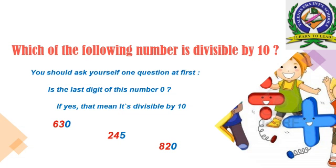The third example: 820. Is the last digit of 820 zero? Yes, that means 820 is divisible by 10.